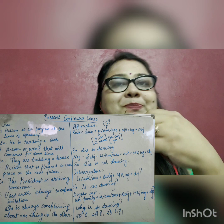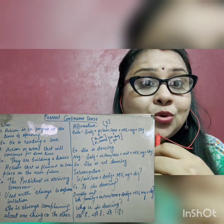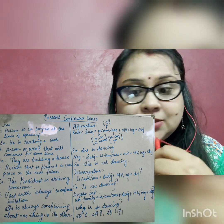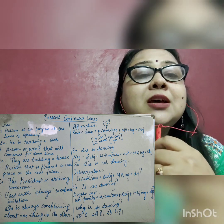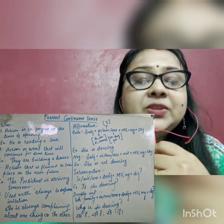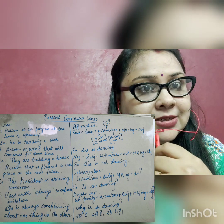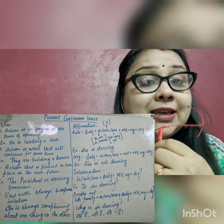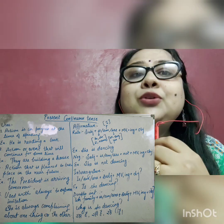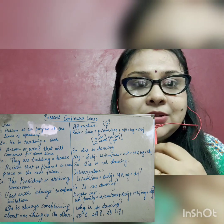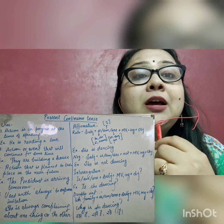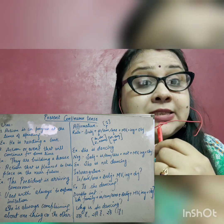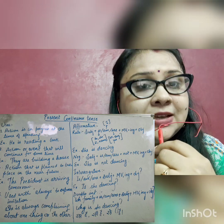Now, dear students, talking about the rule — how to apply Present Continuous Tense — the rule goes: first of all, we write the subject. Subject can be anyone, then plus helping verb. You need to pay attention on this. Is, Am, and Are are the helping verbs.